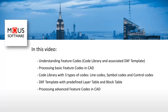In the feature coding library there are three types of codes: line codes, symbol codes, and control codes. We will take a look at how to use and modify these codes, as well as using and modifying the layer table and block table in the DXF template. At the end of this video we will take a look at how to process advanced feature coding in CAD, to get a good overview of the capabilities of the MCNX feature coding system.